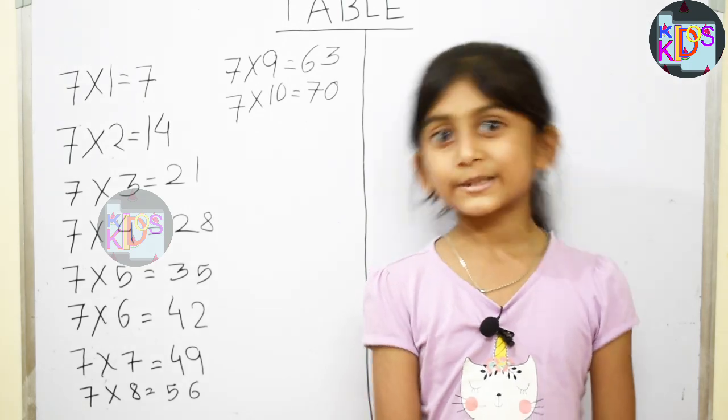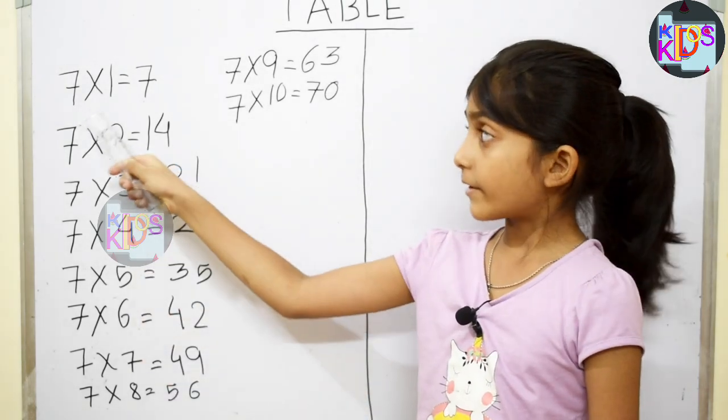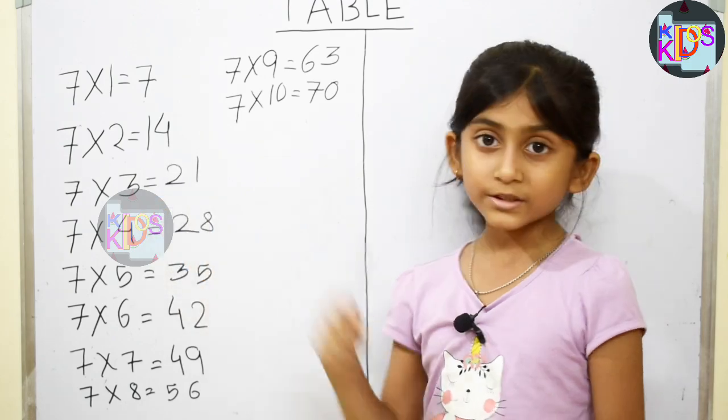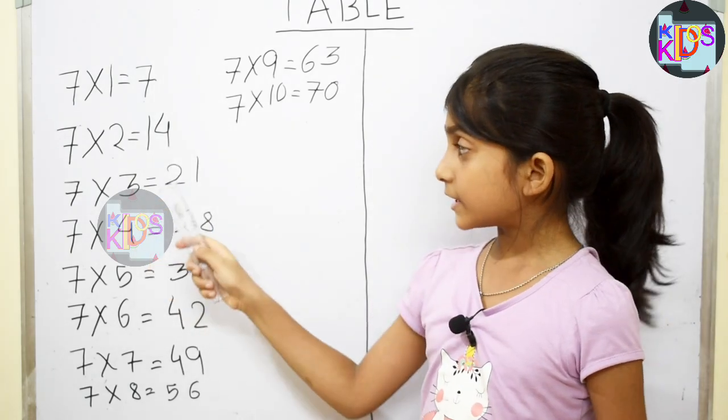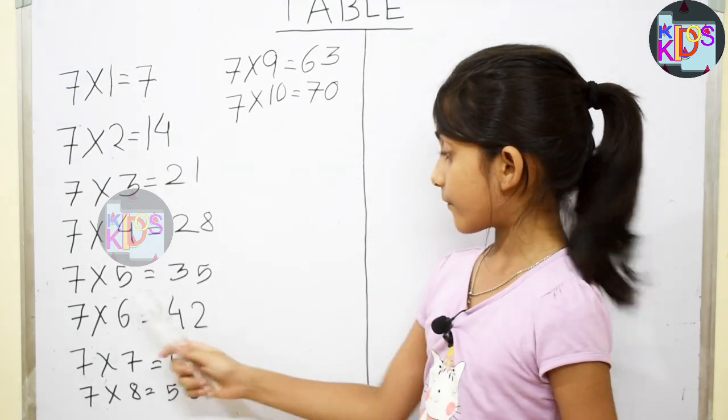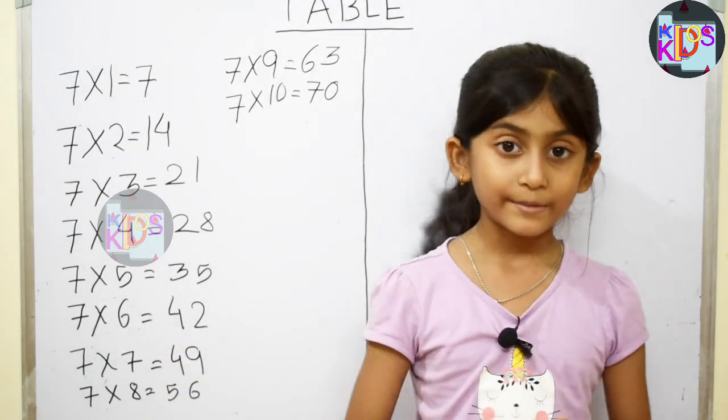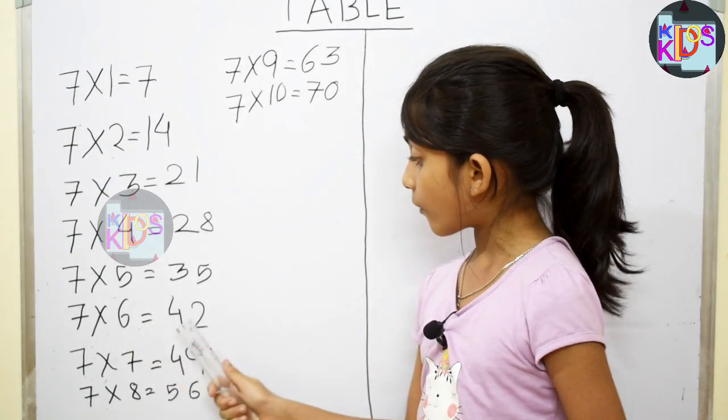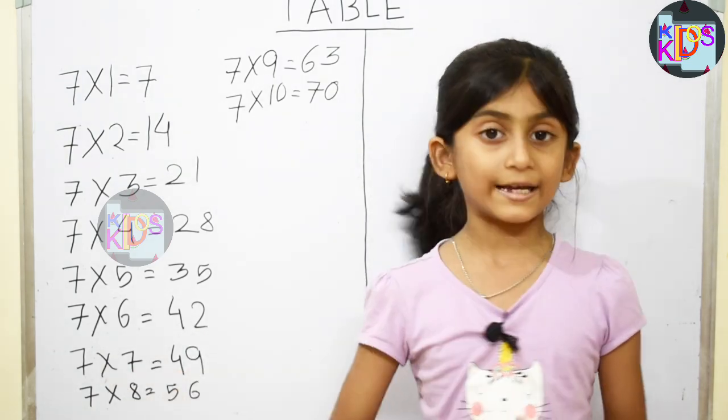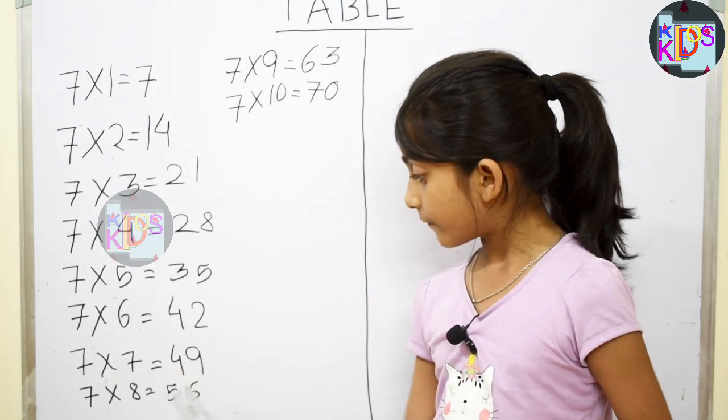Let's start with me. 7 times 1 is 7, 7 times 2 is 14, 7 times 3 is 21, 7 times 4 is 28, 7 times 5 is 35, 7 times 6 is 42, 7 times 7 is 49, 7 times 8 is 56.